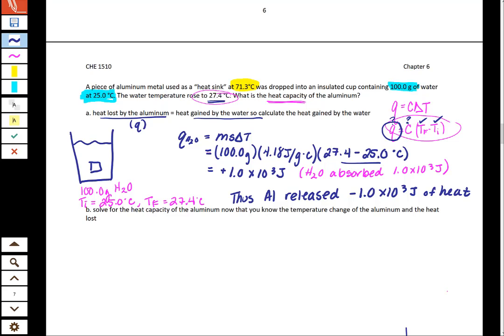So when we solve for the heat capacity of aluminum, remember we were going to use that Q equals C delta T equation. And up here we said we had two variables and one equation but now we have the Q for the aluminum.